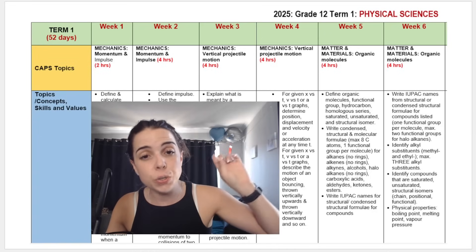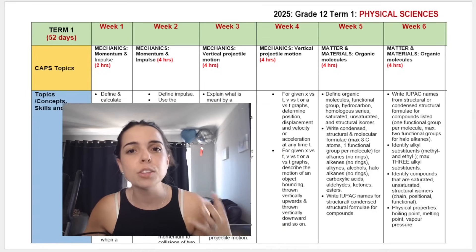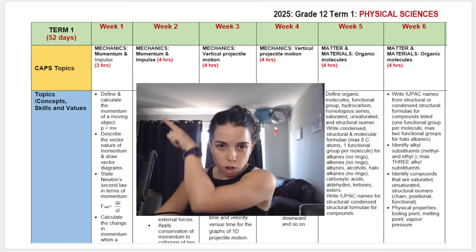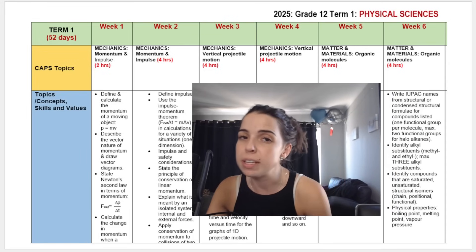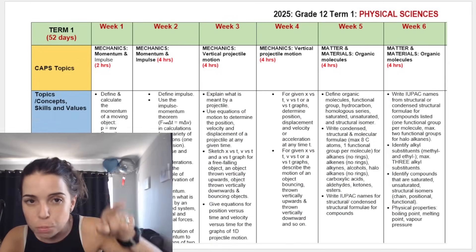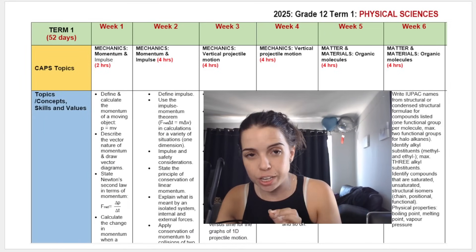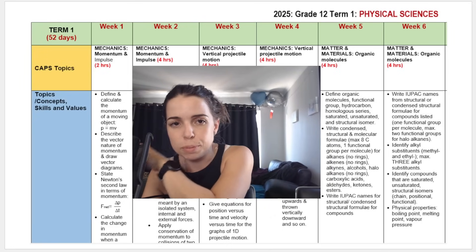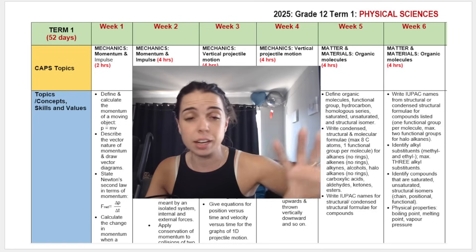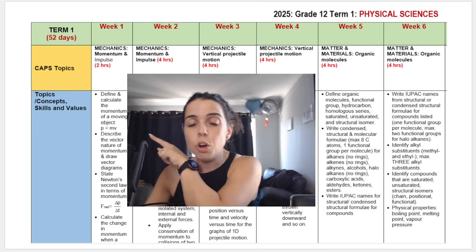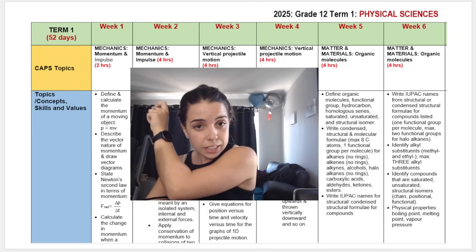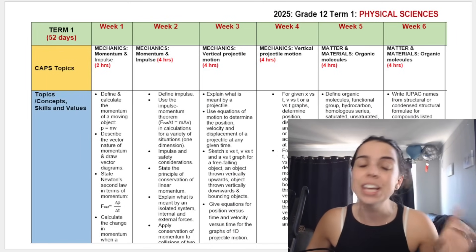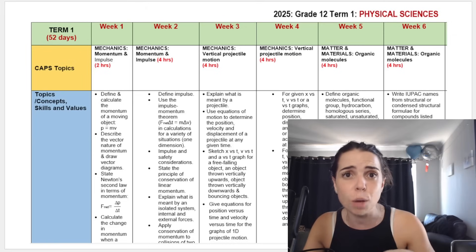Another excellent use for students — and this is how I create my free documents on my website — is to use the ATP as a checklist. When you're studying momentum and impulse, all the bullet points are there. For example: 'Can I define and calculate momentum of a moving object using p = mv?' You ask yourself if you've studied it, tick it, and move on. It also ensures you're not missing any topics when you're studying and working.